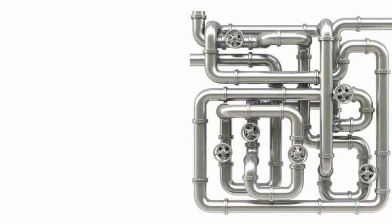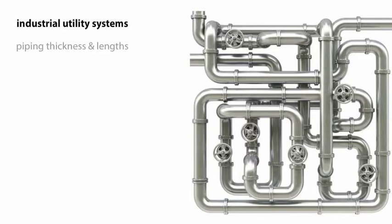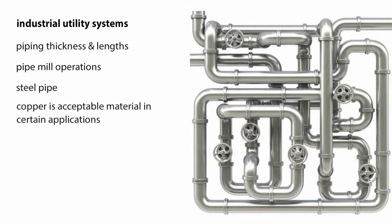This discussion of piping basics, common to many types of industrial utility systems, includes specifications regarding piping thickness and lengths, as well as pipe mill operations. Most gas piping systems are constructed with steel pipe, although copper is also an acceptable material in certain applications.